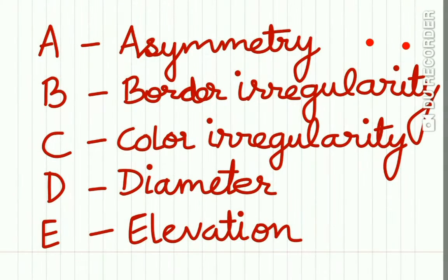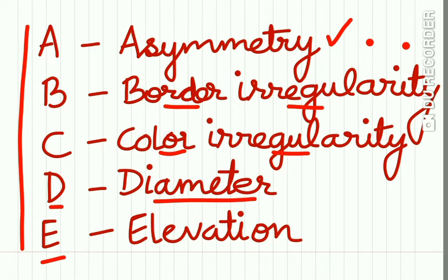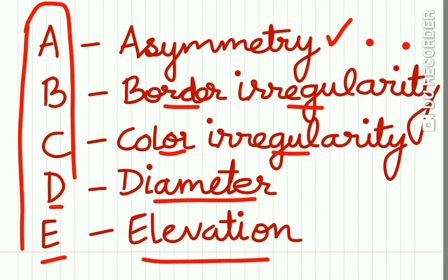When you encounter a pigmented lesion, assess five criteria: A for asymmetry, B for border irregularity, C for colour irregularity, D for diameter of the lesion, and E for whether elevation is present or not. This is the ABCDE rule.